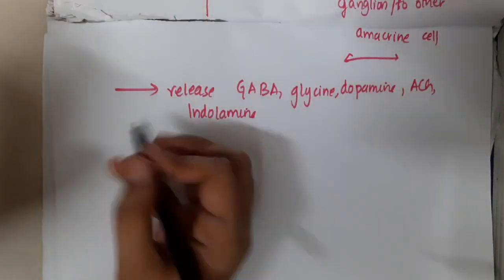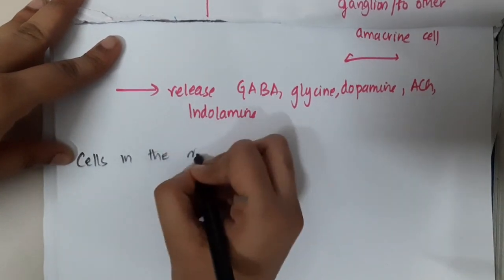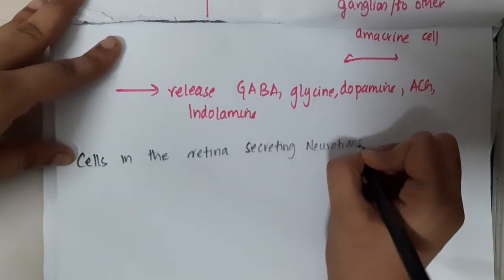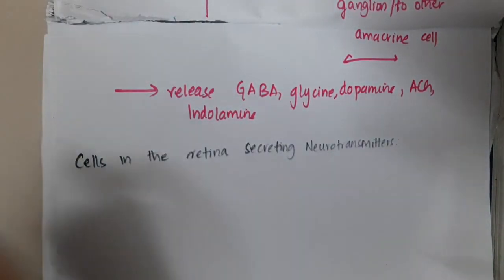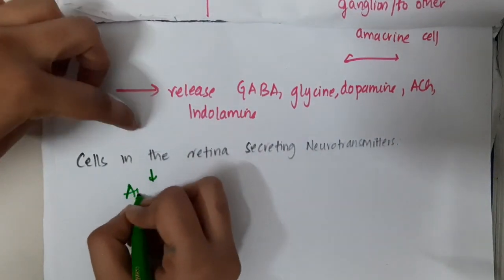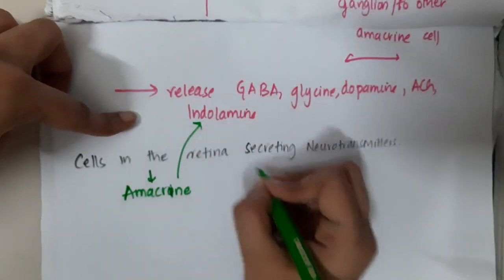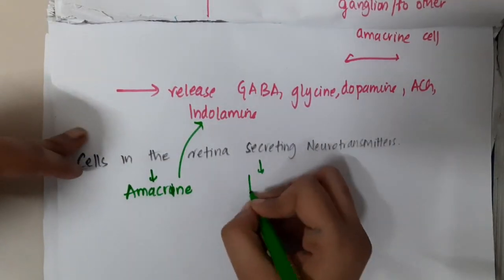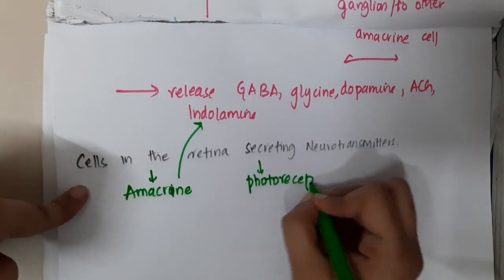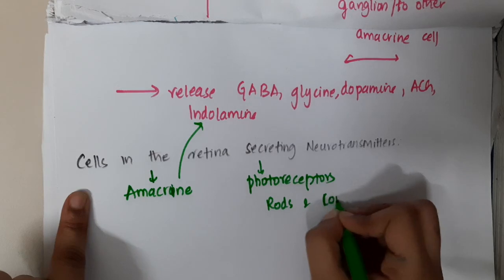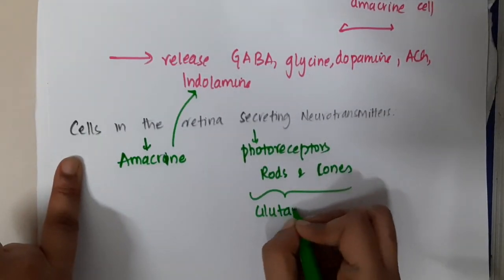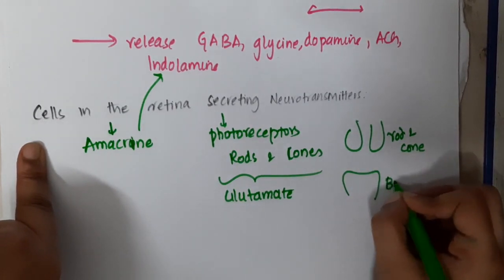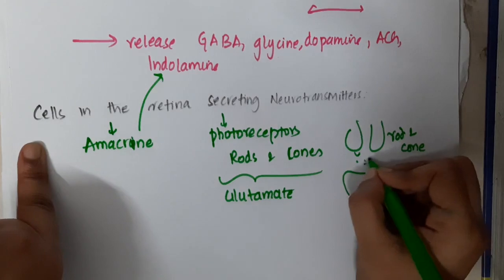Cells in the retina secreting neurotransmitters include: first, amacrine cells, which secrete GABA, glycine, dopamine, acetylcholine, and indolamine. Second, photoreceptors — rods and cones — which produce glutamate at their synapses with bipolar cells.